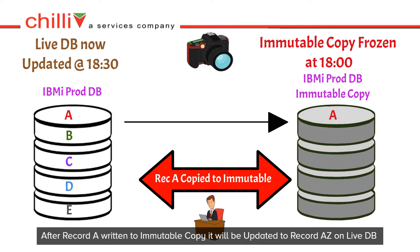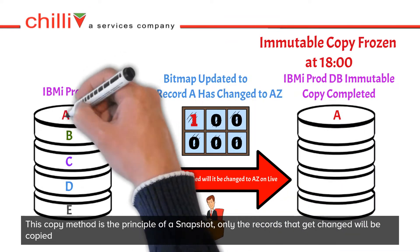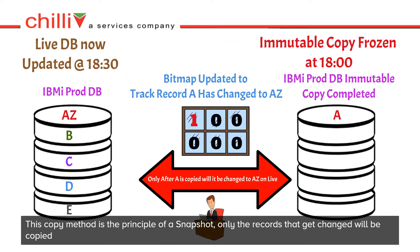This process repeats itself whilst the bitmap is active. So when B is to be updated, it will get copied to the immutable before being updated to BX on the live system.